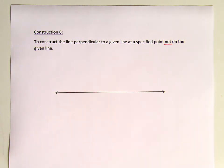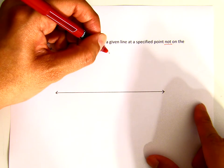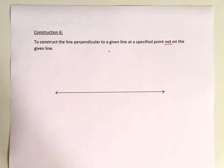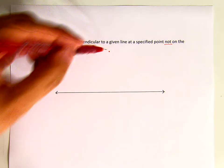In Construction 6, we will draw a line perpendicular to this given line, passing through a point not on the given line. Let's choose a point which is not on the given line, let's say here. So this is the given line, and that's the given point.